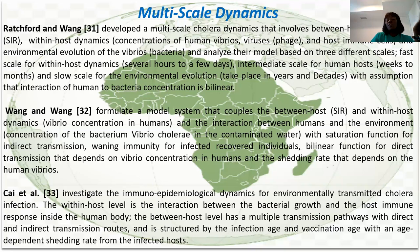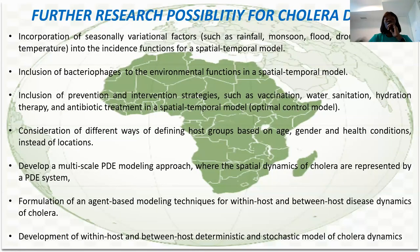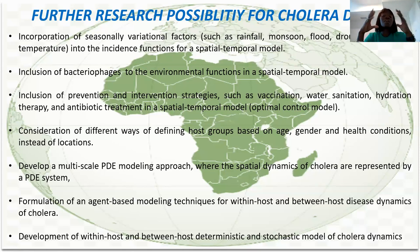So those are the models reviewed so far. There are many models on cholera and a lot of work is ongoing — the field is still open for more research. One area is seasonal variation factors. Although some work has considered this, we are looking at a situation where variation factors like rainfall, monsoon, flood, and water temperature come into a spatial-temporal model — not just ordinary differential equations, but more of a multi-scale model.